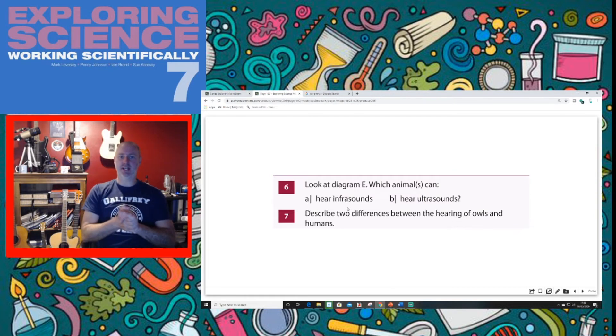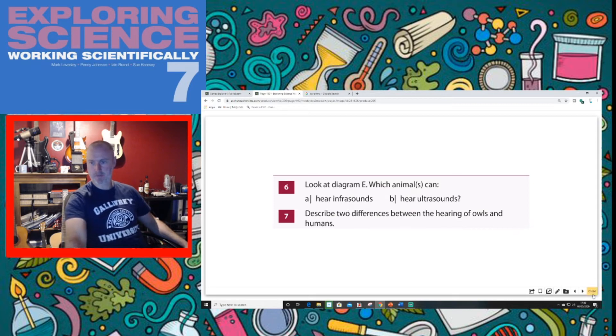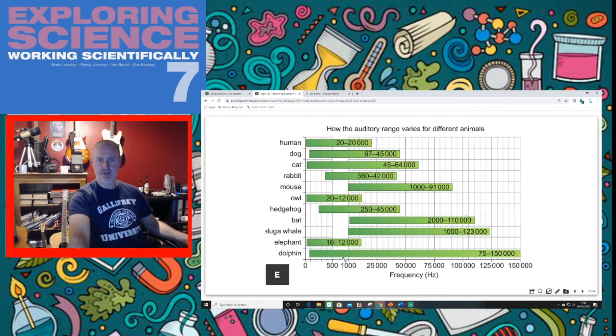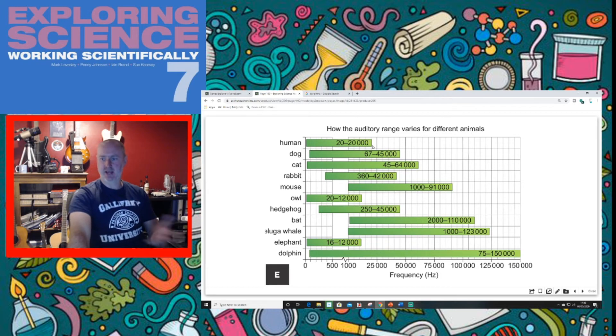Question six: Which animals can hear infrasounds and which animals can hear ultrasounds? Well, if we go back to this chart, I didn't mention the term infrasound and ultrasound. I mentioned the term auditory range. All right. And I said that there are certain frequencies we can't hear below and there are certain frequencies we can't hear above. They are called the infrasound and the ultrasound.